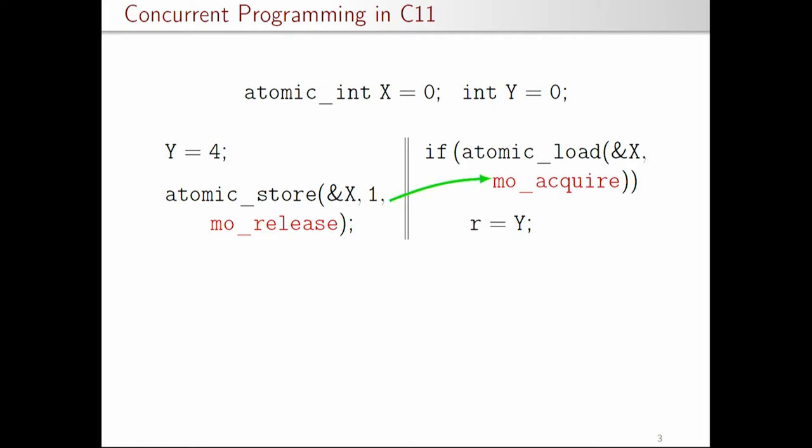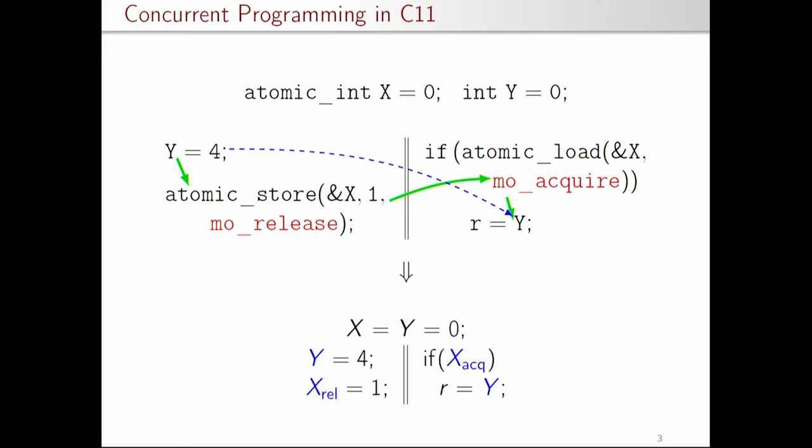The third rule says that when an atomic_load with memory_order_acquire reads from a release write or store operation, it establishes a synchronization between those two accesses — a happens-before relation between the atomic store and the atomic load. As a result the store of Y and the read of Y are no longer concurrent, so the program has defined behavior and Y reads the value 4. This gives the intended meaning for the programmer. I will use a simplified syntax attaching release and acquire directly with the accesses.